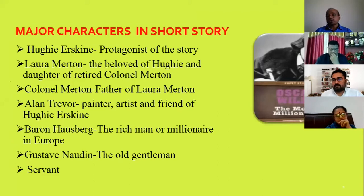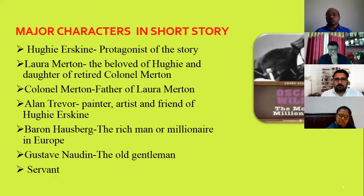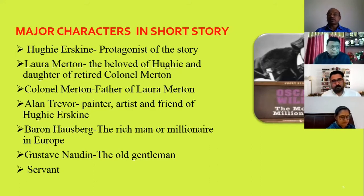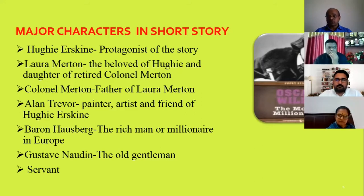Next, major characters in the short story. Hugh Erskine is the protagonist of the story. Laura Martin is the beloved of Hugh Erskine and daughter of the retired Colonel Martin. Colonel Martin is the father of Laura Martin. Alan Tarver is a painter, artist, and friend of Hugh Erskine. Baron Hausberg is the rich man or millionaire in Europe. Gaston Audin is the old gentleman and servant. These characters are minimum in number as compared to full-length fiction.